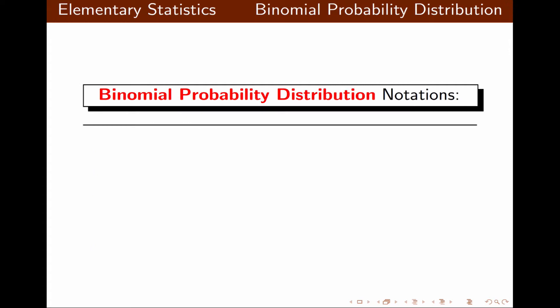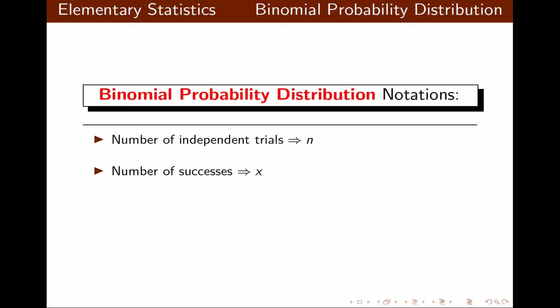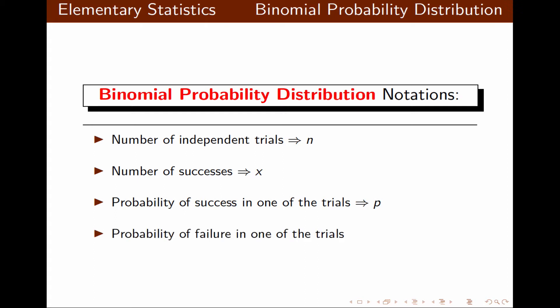The probability of success and the probability of failure remains the same for all independent events. The number of independent events or independent trials is n, the number of successes is X, and these variables are discrete meaning they're countable. Probability of success in each trial is P, and probability of failure is Q, where Q is equal to 1 minus P.